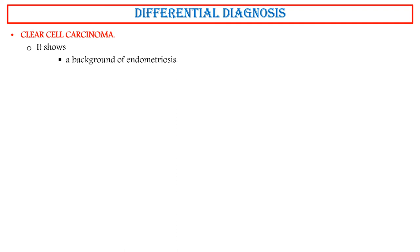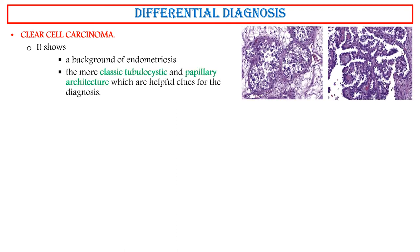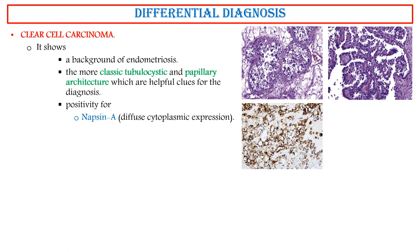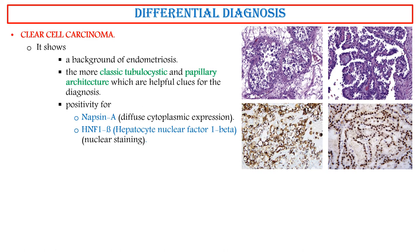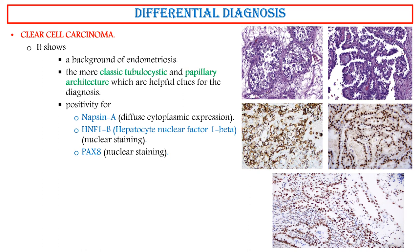Clear cell carcinoma shows a background of endometriosis and the more classic tubulocystic and papillary architecture, which are helpful clues for diagnosis. It shows positivity for Napsin A (diffuse cytoplasmic expression), HNF1-beta (hepatocyte nuclear factor 1-beta, nuclear staining), and PAX8 (nuclear staining), with typical negativity for SALL4.